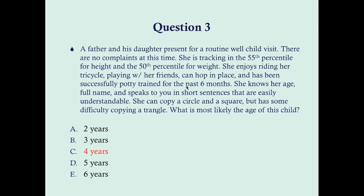Hopping in place is a motor skill generally developed by age four and is very easy to test in the clinic — ask any four-year-old at a well-child visit to hop in place. Successful potty training at this point: not all children will be potty trained by four years, it can take up to five years, but all kids should be potty trained by school age. A lot of children are potty trained by three to four years of age. Knowing her age and full name happens at about four years of age.